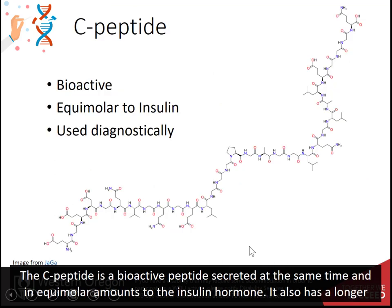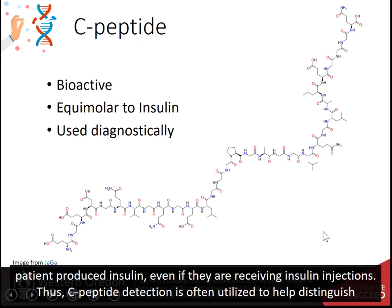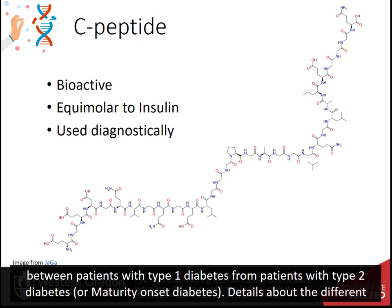The C peptide is a bioactive peptide secreted at the same time and in equimolar amounts to the insulin hormone. It also has a longer half-life than insulin and is excreted by the kidneys into the urine, making detection easy. Furthermore, it allows for the detection of patient-produced insulin even if they are receiving insulin injections. Thus, C peptide detection is often utilized to help distinguish between patients with type 1 diabetes from patients with type 2 diabetes or maturity onset diabetes.